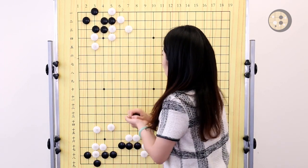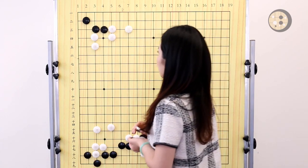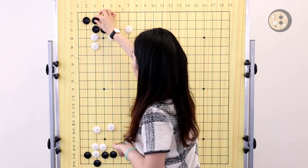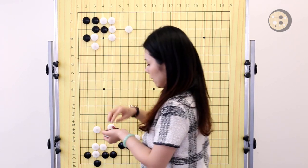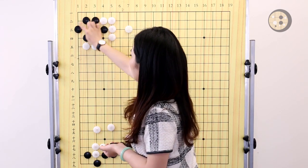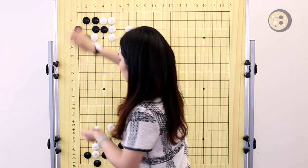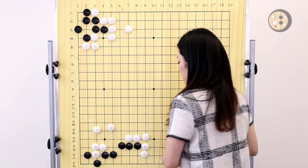If white says, okay, blocking here doesn't work, I'm going to try the other way. Hane on the other side. Now you're going to block one more time and play another tiger's mouth here. Now you're able to make one eye over here and also you have the second eye on the top.